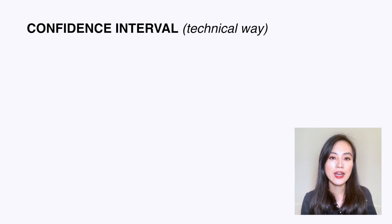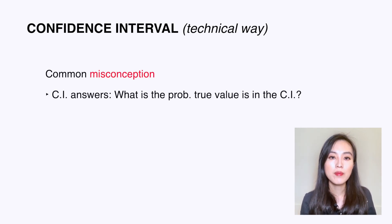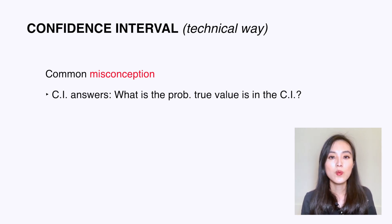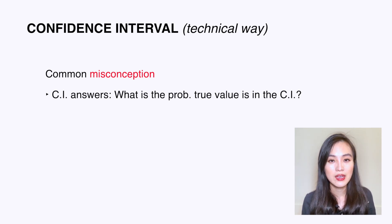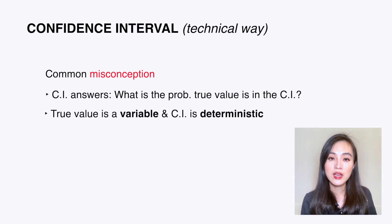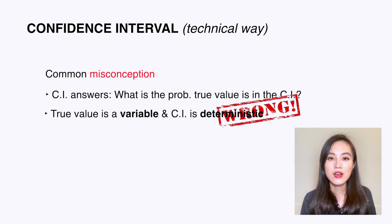I want to highlight a common misconception: that the confidence interval answers the question 'what is the probability that the true value lies within a certain threshold?' This is not what confidence interval is answering, because the misconception assumes the true value is a variable and the confidence interval is deterministic. The correct understanding is just the opposite.